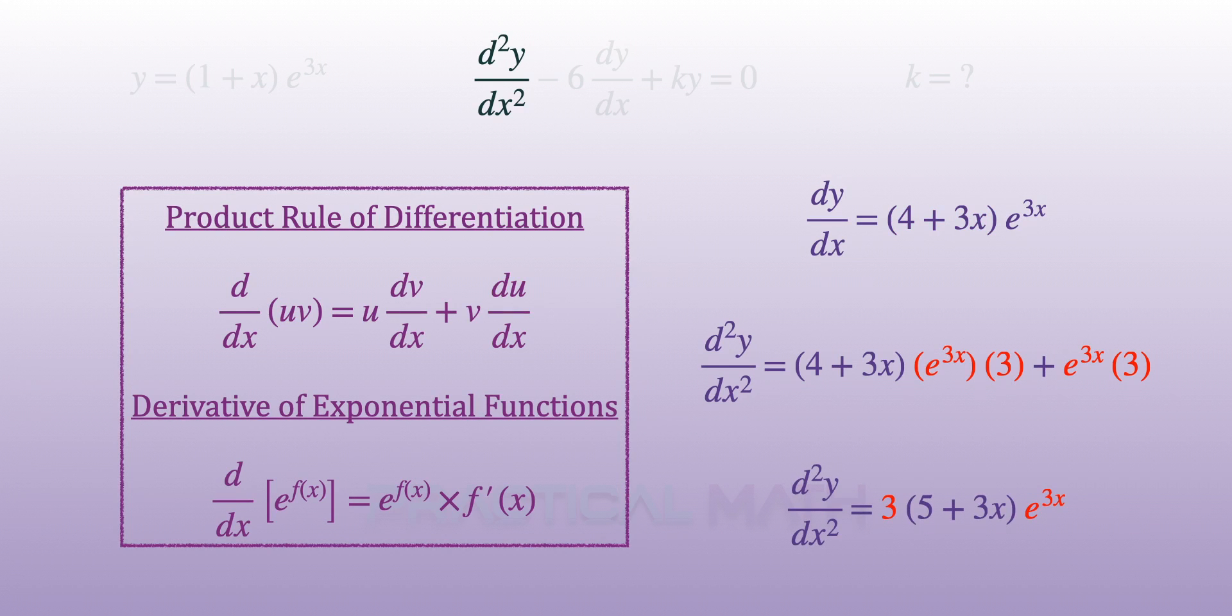Once again, we'll extract the common factor of 3e to the power of 3x. Our second derivative of y is now equal to the product of 3e to the power of 3x and 5 plus 3x.